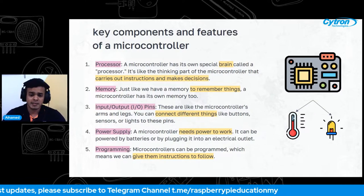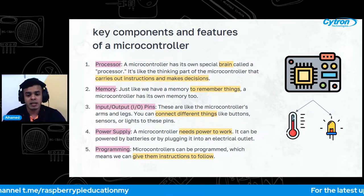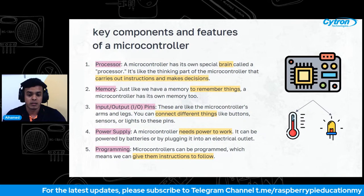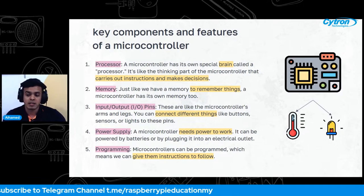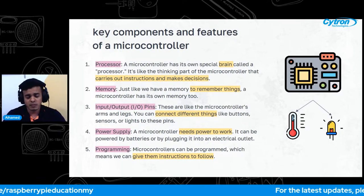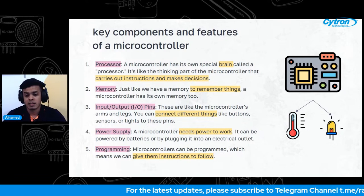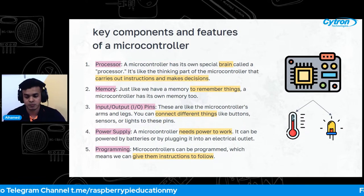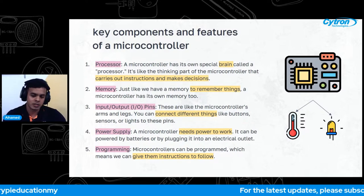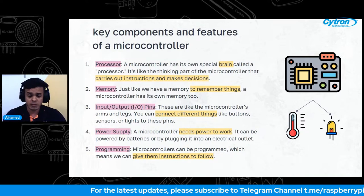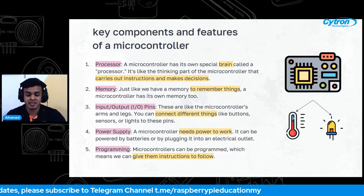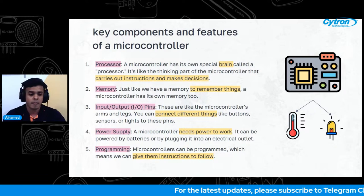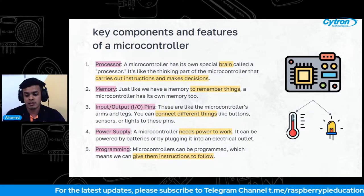The last feature is programming — giving instructions to the microcontroller. Just as we follow a recipe to bake a cake, a microcontroller follows a set of instructions to perform specific tasks. Think of programming as a language the microcontroller understands. Instead of words, we use special code that tells it what to do. When we write a program, we give a list of step-by-step instructions that can include turning certain components on or off, reading values from sensors, or making decisions based on inputs.